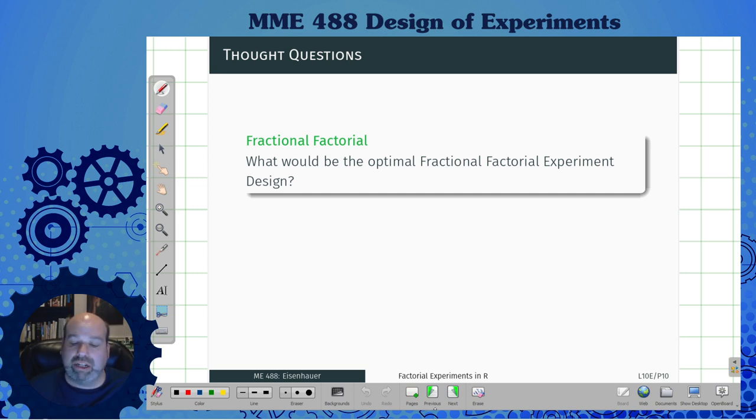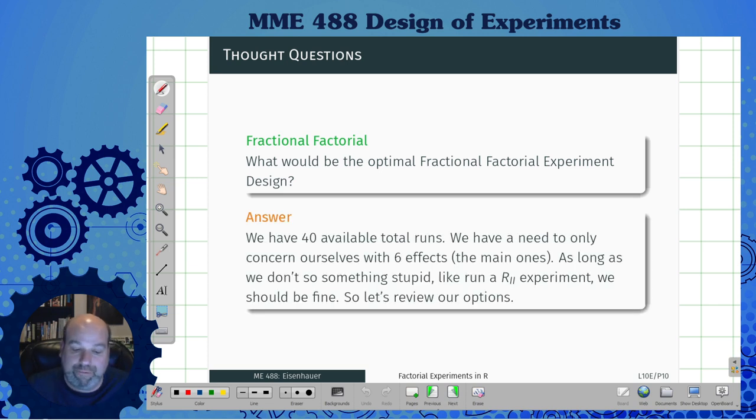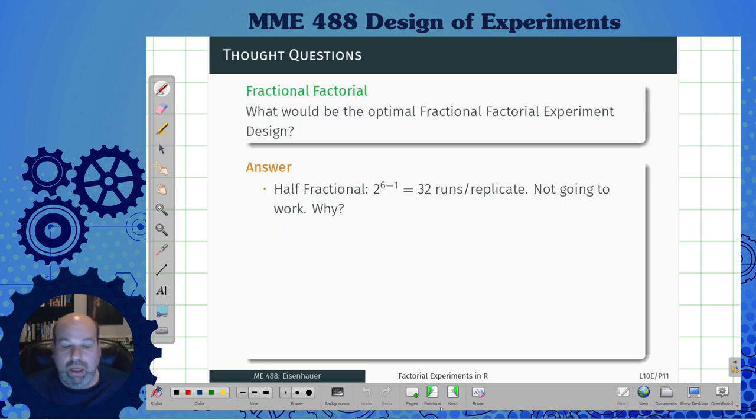What would be the optimal fractional factorial experiment design? We have 40 available runs, we only need to concern ourselves with the six effect means. As long as we don't do something stupid and make an R2 experiment where we're aliasing main effects to main effects, we should be fine. So we want to have at least an R3 or higher. We could possibly use a half fractional, 2 to the 6 minus 1, thirty-two runs per replicate. Unfortunately this isn't going to work because I only have 40 runs. I'd barely be able to run even this one once. I wouldn't do enough to actually get any real degrees of freedom for the errors.